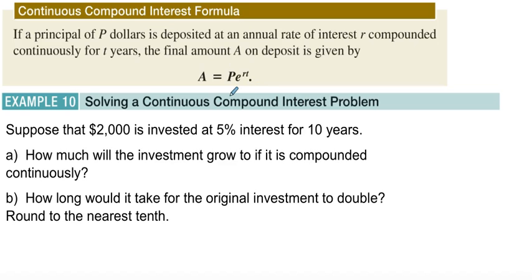Let's look at our problem. We have $2,000, and we are going to invest that at 5% interest for 10 years. How much will it grow if it's compounded continuously? And also, how long is it going to take to double? Very similar to the previous examples, but now we're doing this in a continuous session rather than finite.